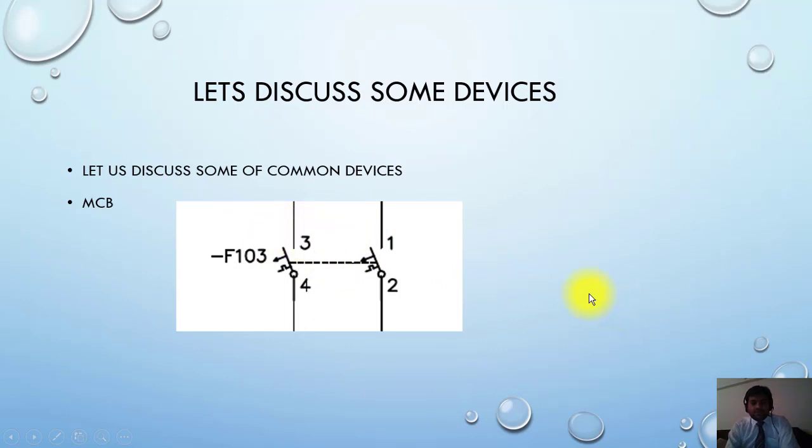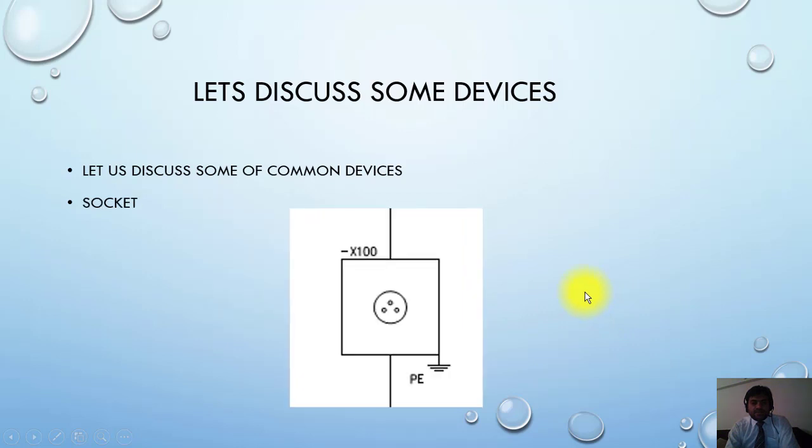The next symbol, which is very easy and you can find in your houses also, is sockets. This is the symbol of a socket. This is basically a receptacle. You can connect your plug here and draw the power. And this point, PE, is showing that it is earth. X100 here is the name of the device.